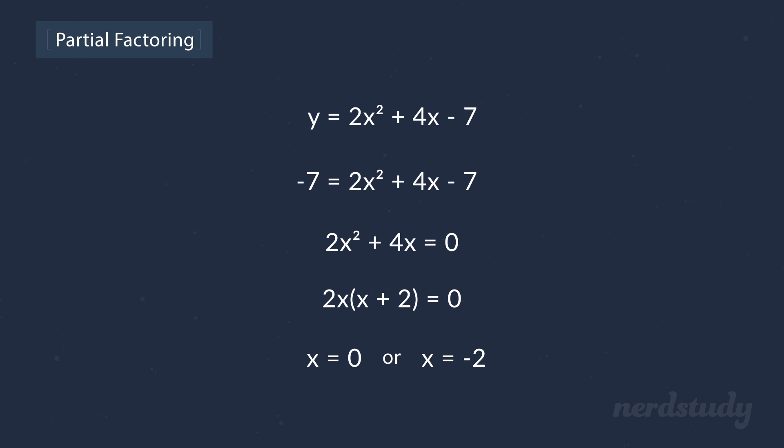So remember, we started by making our y equal to minus 7, which was our c value, and we got these two x values. So then we know for a fact that (0, -7) and (-2, -7) are legitimate values within our graph. What we're interested in, however, is the vertex.